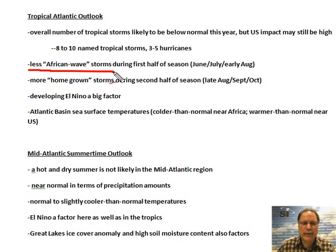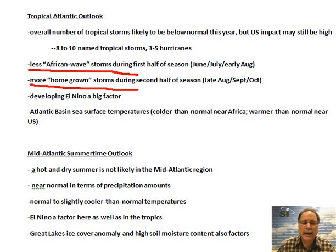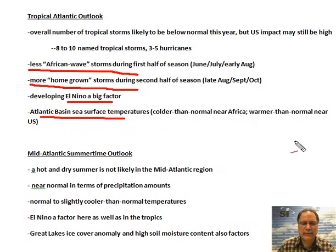Those colder than normal temperatures in the Eastern Atlantic should result in fewer than normal African wave type storms during the first half of the tropical season — June, July, first half of August. But the warmer than normal sea surface temperatures near the US East Coast and Gulf of Mexico could very well lead to a higher than normal number of homegrown type storms during the second half of the tropical season, leaving the US East Coast and Gulf of Mexico coast quite vulnerable later in August, September, and October. El Niño is a big factor, as are those Atlantic sea surface temperatures — colder than normal off Africa and warmer than normal off the US East Coast.